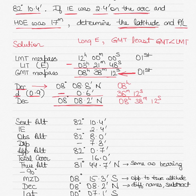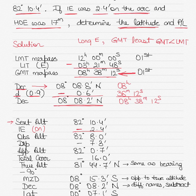Now we write down the sextant altitude: 82 degrees 10.4 minutes, as given in the question. The index error was 2.4 minutes on the arc. On the arc is always subtracted; off the arc is always added. Subtracting 2.4 minutes, we get the observed altitude of 82 degrees 8 minutes.